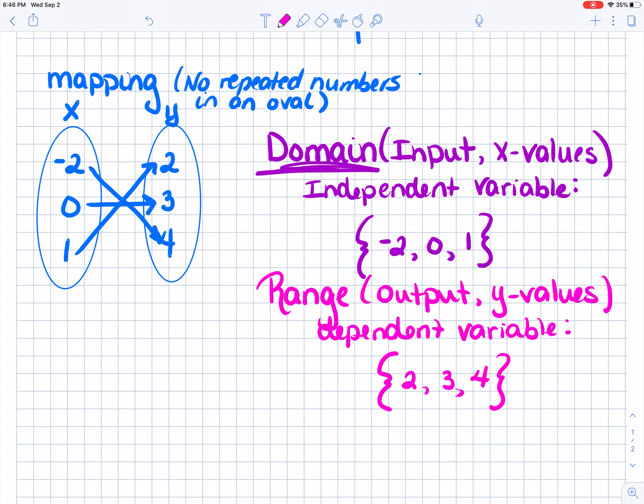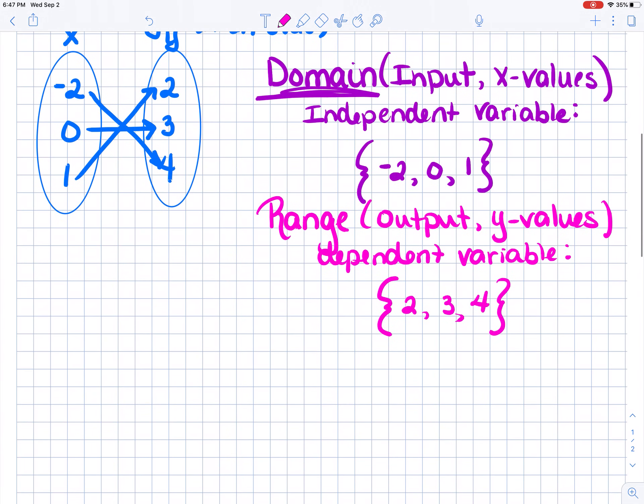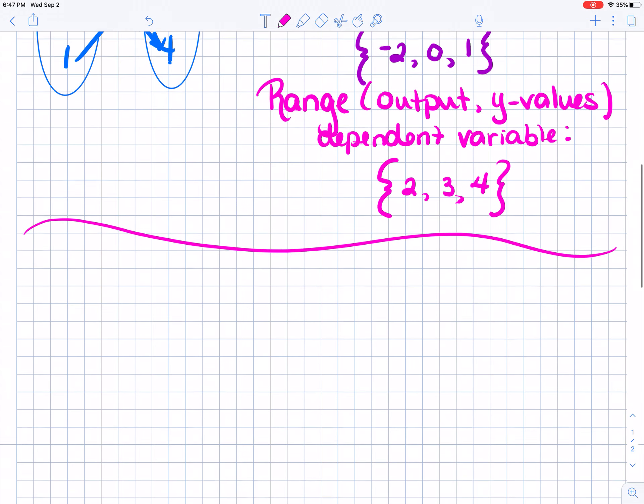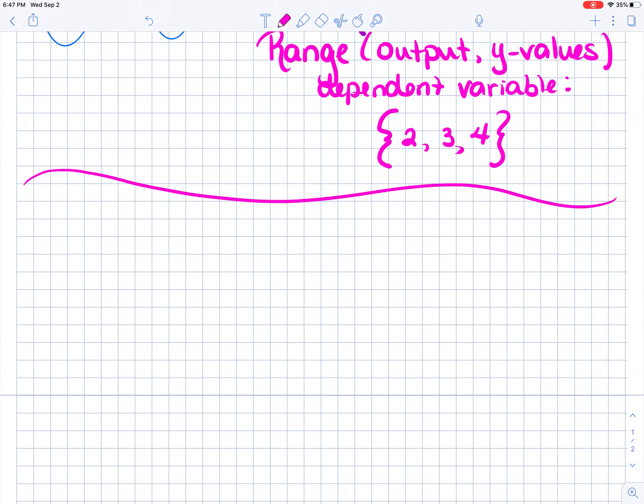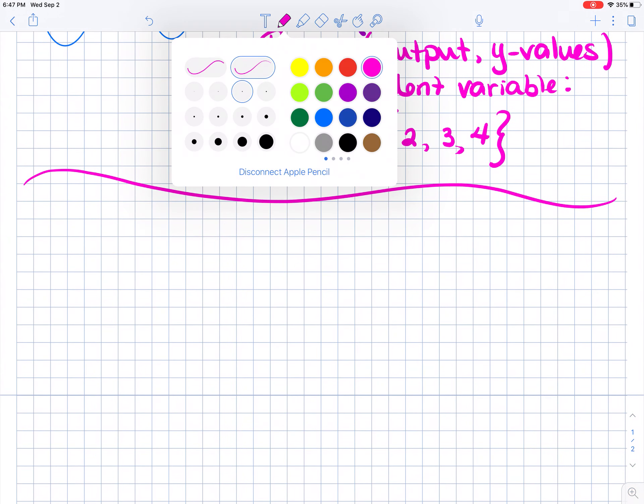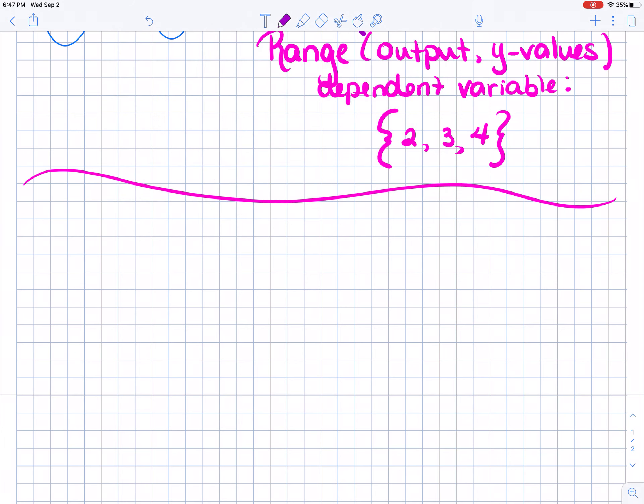Let's look at another example. The next example, I'm going to give you some ordered pairs. This time I'm going to give them to you horizontally. Just think, how is this relationship being presented to me? Here's the given relation: negative 1, 1, 2, 3, negative 1, 4, and 7, 5.